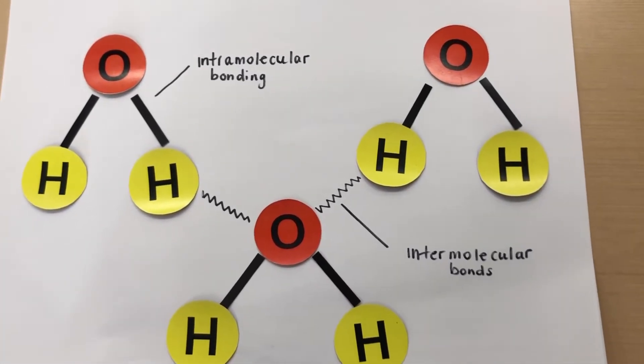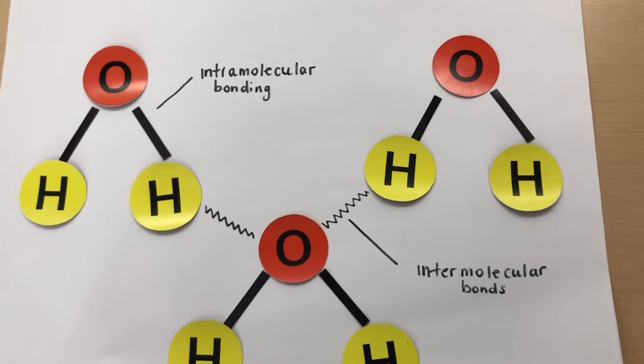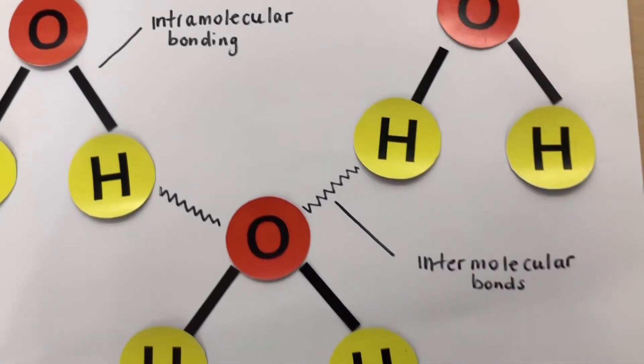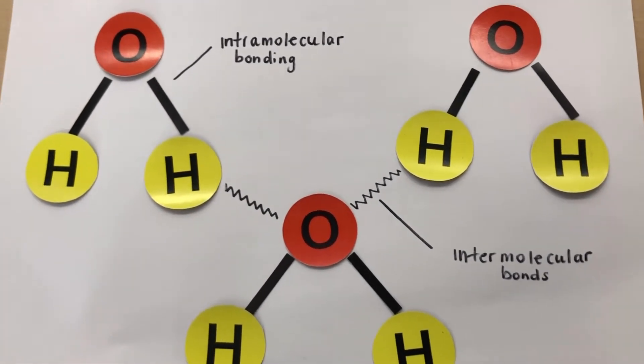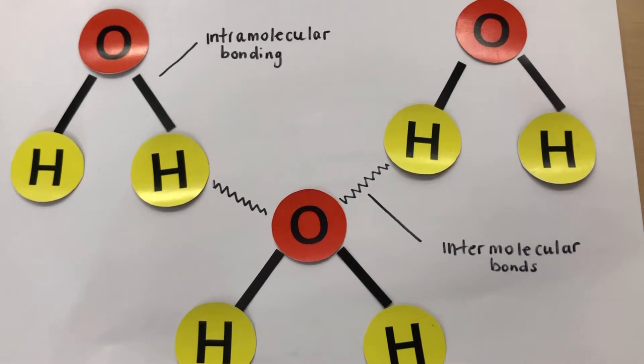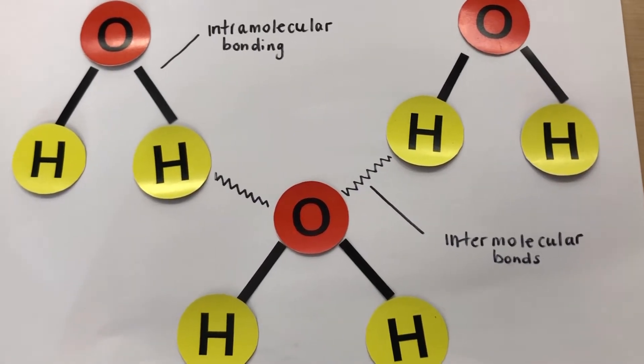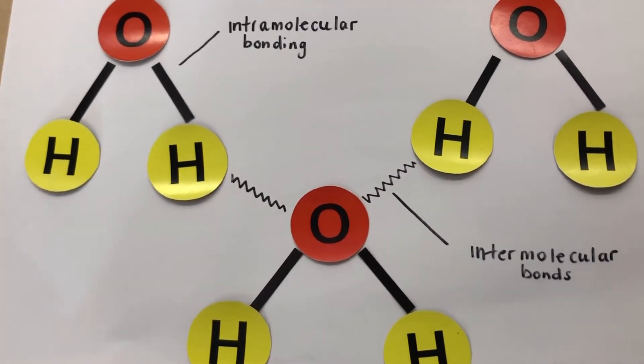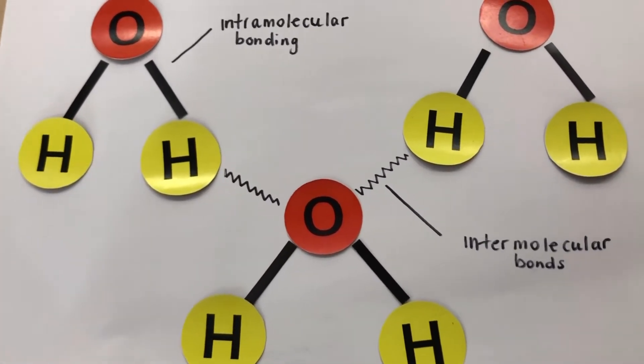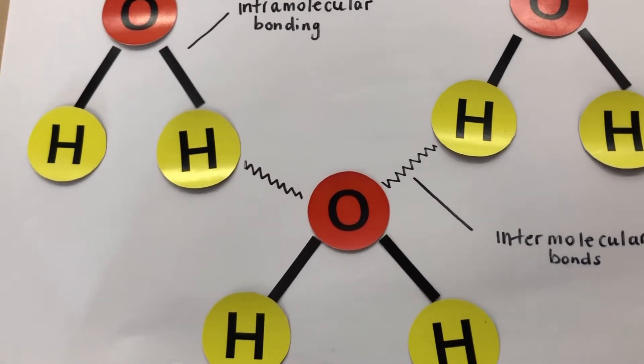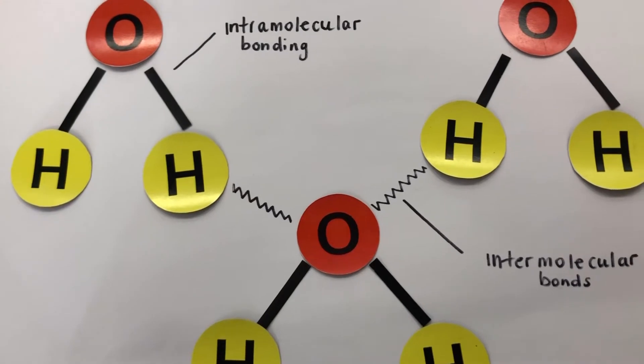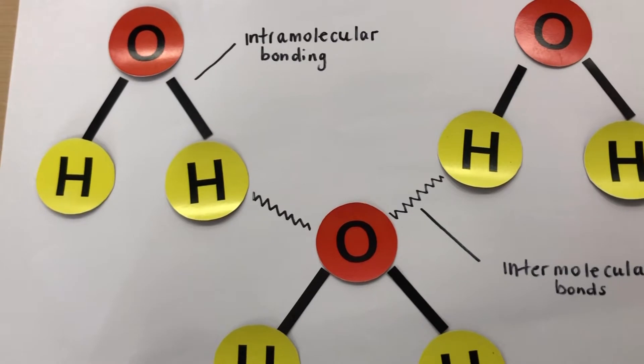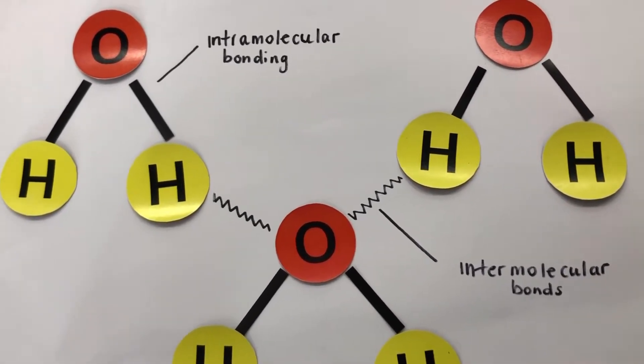Today we're going to look at two new terms in our unit: intramolecular bonding and intermolecular bonding. You can see that I've used water as an example. If we describe what intramolecular bonding is, it's really the strong bonds found within a molecule. This example between the H and the O is an example of a covalent bond, but we can also find intramolecular types of bonds in ionic substances and in metallic substances.